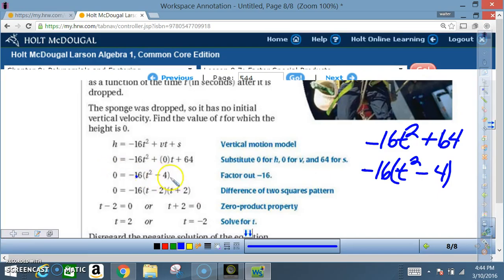All right, so now we're back here. And we're going to end up with the square root of t squared is t. The square root of 4 is 2. I want a positive version and a negative version. So I end up with t minus 2 times t plus 2. And don't forget that negative 16.